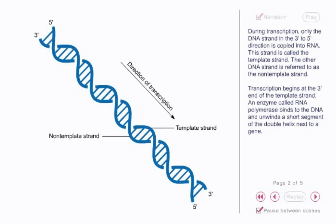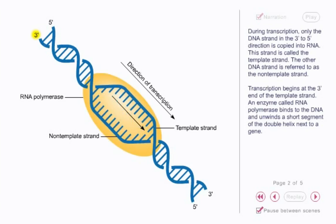Transcription begins at the 3' end of the template strand. An enzyme called RNA polymerase binds to the DNA and unwinds a short segment of the double helix next to a gene.